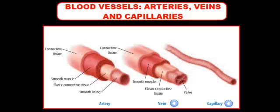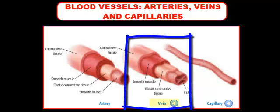The second vessel is the vein. Veins are the second thickest, but not as thick as arteries because they don't carry blood away from the heart — veins carry blood back to the heart. So they're not dealing with as much pressure as the arteries.